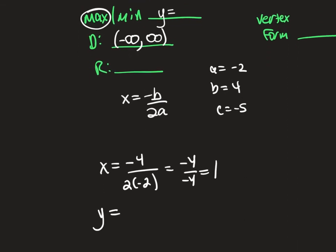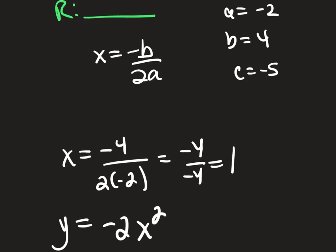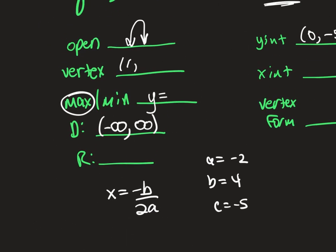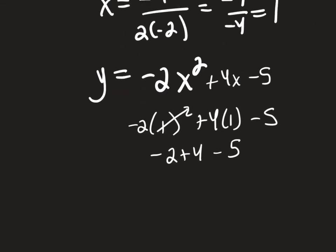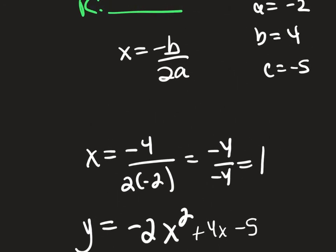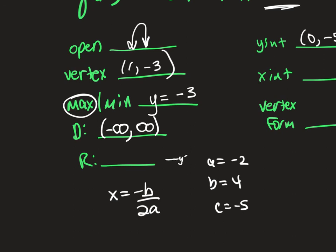To find the y part, plug in x = 1: -2(1)² + 4(1) - 5 = -2 + 4 - 5 = -3. So y = -3, the y part of my vertex is -3. My maximum value is at y = -3. The range is from negative infinity to -3: (-∞, -3].